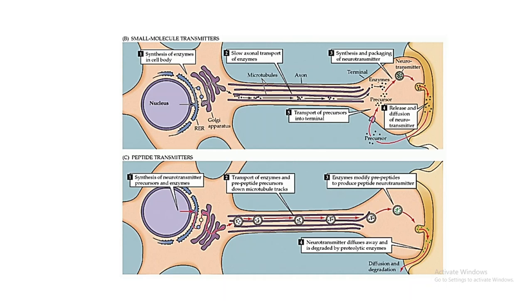These neurotransmitters are synthesized in the neuron itself, but within the neuron the site of synthesis of small neurotransmitters and large neurotransmitters are different. In the case of small neurotransmitters, they are synthesized in the synaptic terminal or nerve terminal from their precursors. These precursors may be transported from the extracellular region or from the cell body, but the enzymes involved in small neurotransmitter synthesis are transported from the cell body.